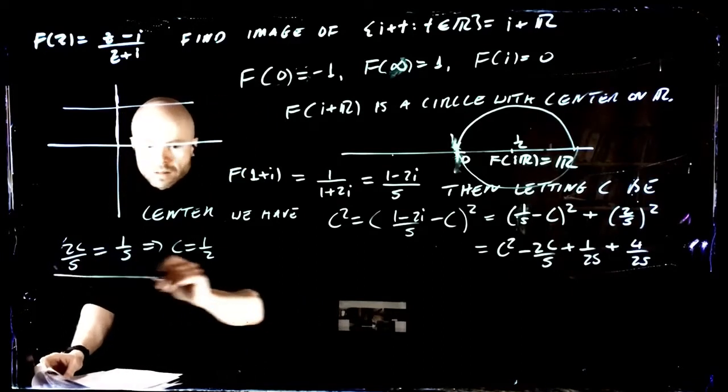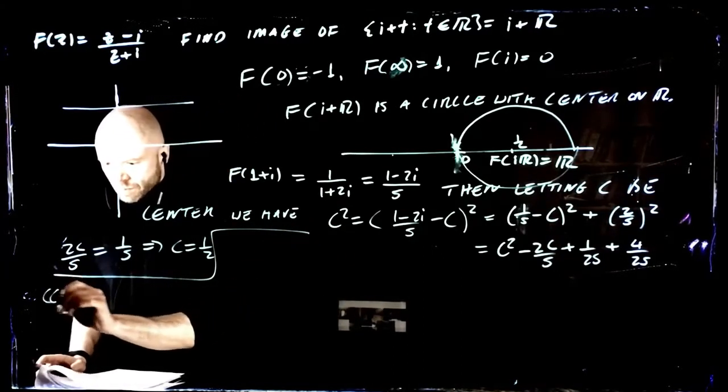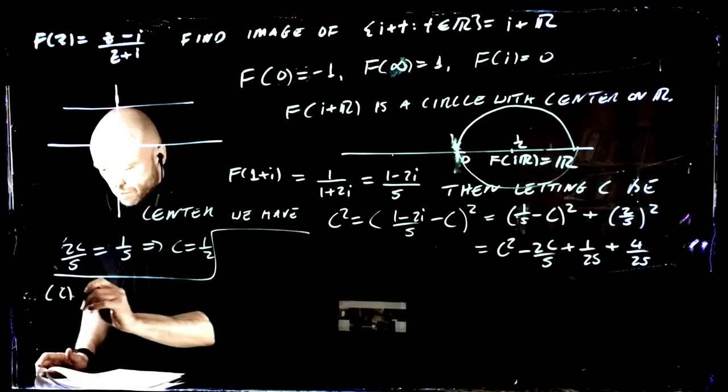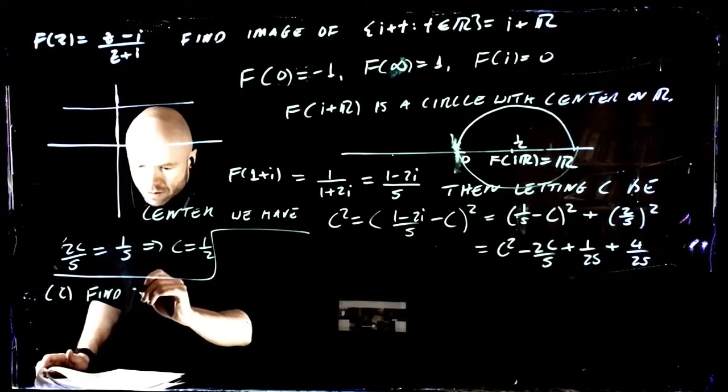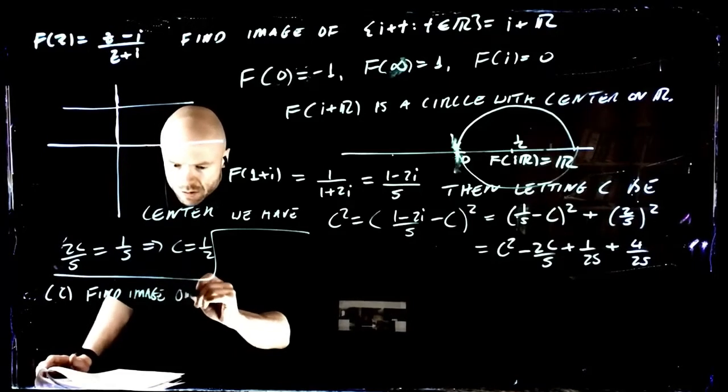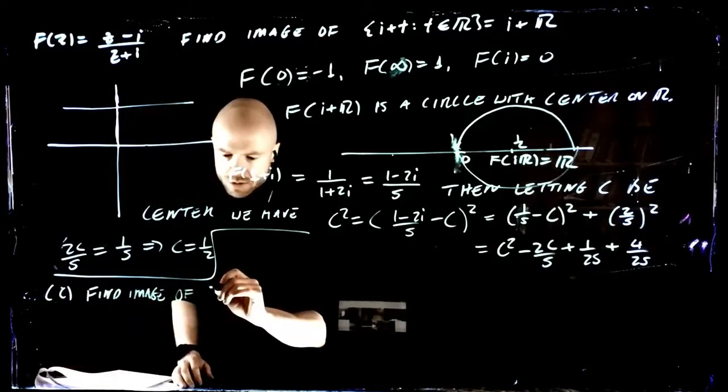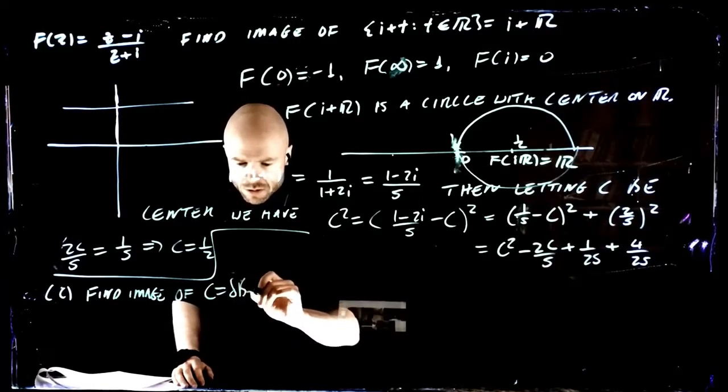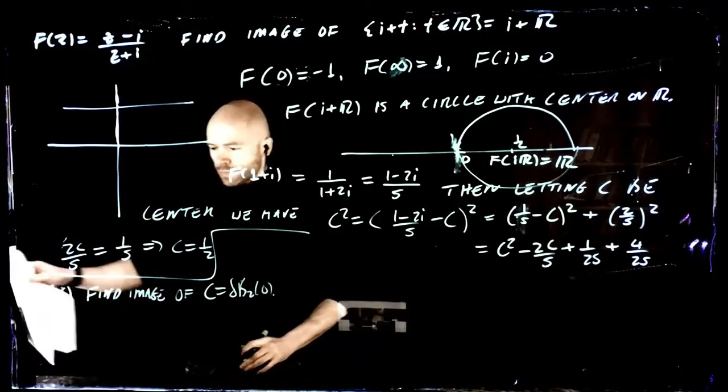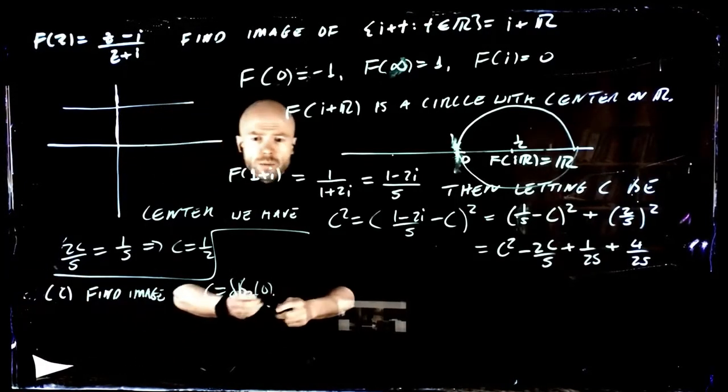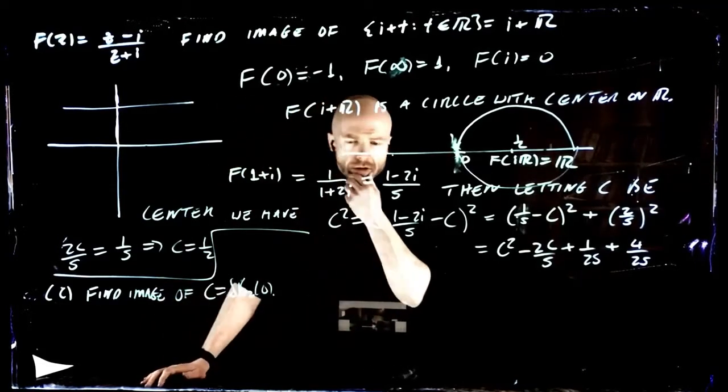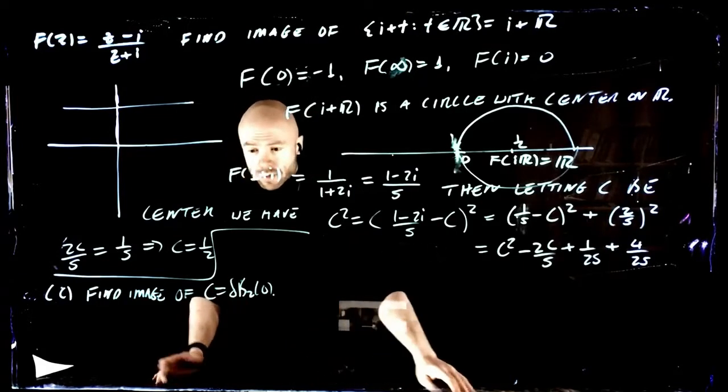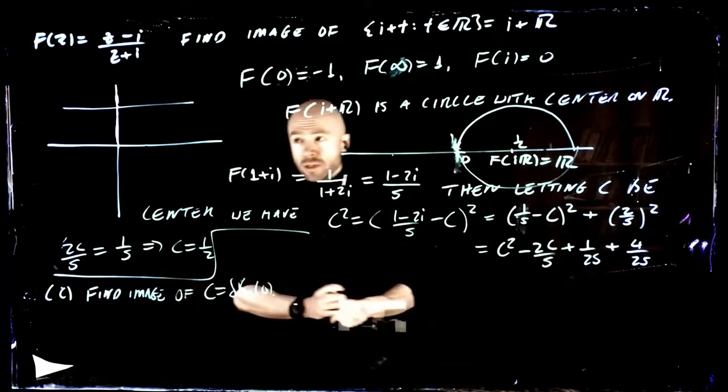Part C. Find the image of the circle of radius 2 around 0. Circle of radius 2 around 0. Is it going to be a line or a circle? It's a circle again. It doesn't go through, it's got to hopefully be a circle. Let's draw it.